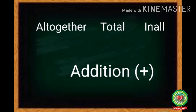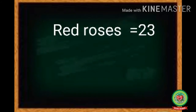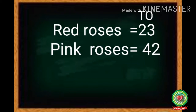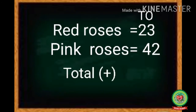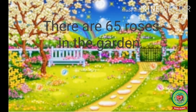First we write: red roses equals 23. We write the place value chart on it with ones and tens. Then we write: pink roses equals 42. Then write 'total' and put the plus sign in the bracket. We add: 3 plus 2 is 5, and 2 plus 4 is 6. That means there are 65 roses in the garden.